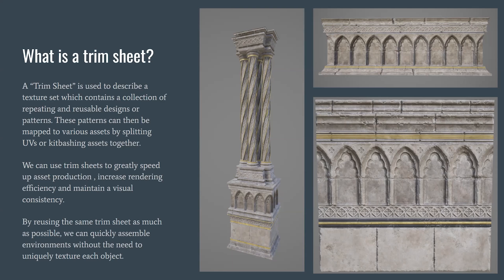Another great benefit of trim sheets is visual consistency — because all assets use the same texture, values and roughness are consistent from one asset to the next, creating an environment that feels like it's lived in the same world. There are drawbacks though: you can't easily have unique assets. For example, a statue with uniquely sculpted details wouldn't suit a trim sheet. So trim sheets are appropriate for some tasks but not others.